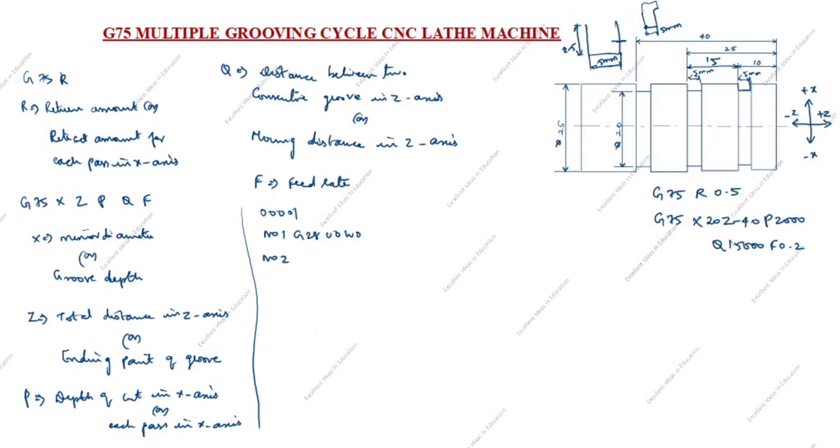N02 G97 M03 S800. What is G97? G97 is constant spindle speed. M03 is spindle on. S800 is spindle speed.